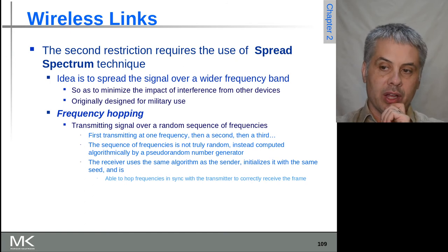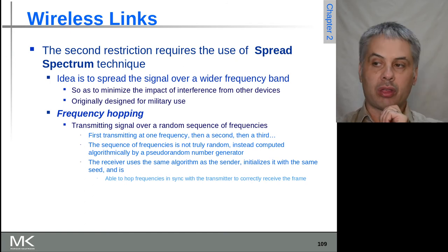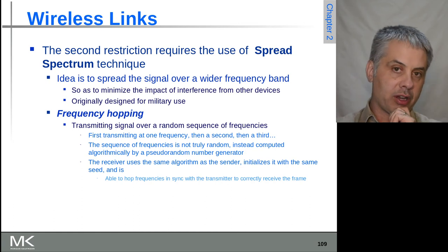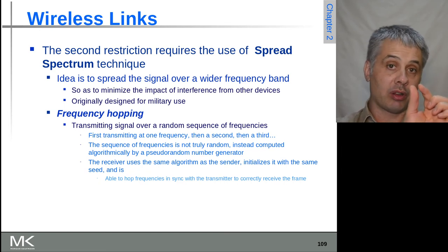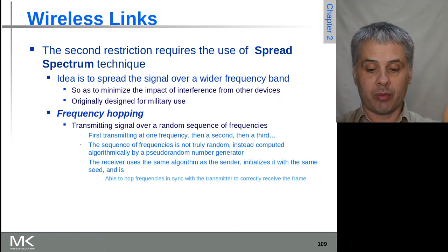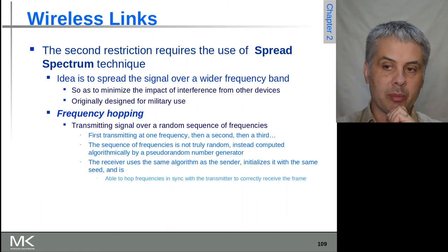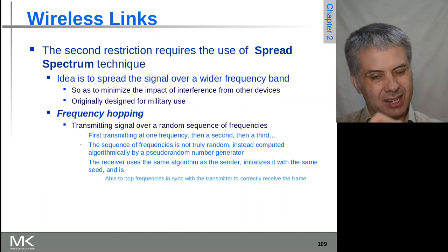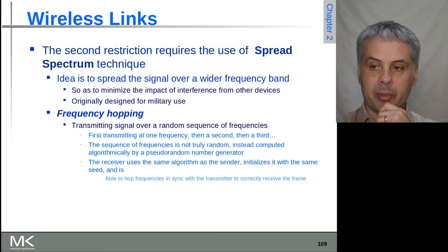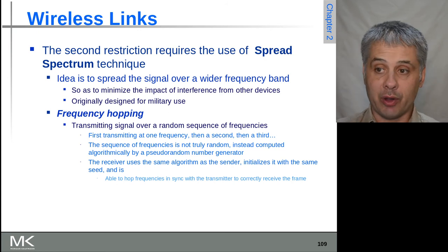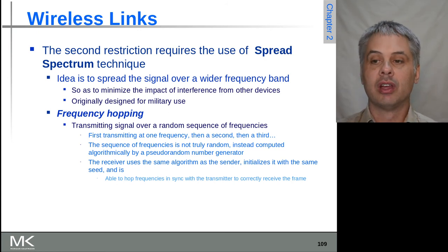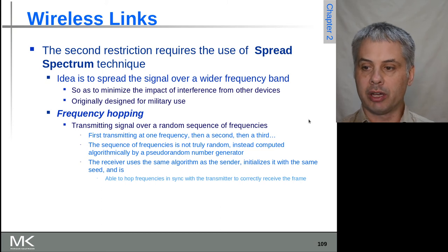Another approach is frequency hopping. Rather than staying on one thin channel over a long period, you use the thin channel but hop where it is randomly or pseudo-randomly in the frequency band. This makes the probability of any other user being interfered with on a continuing basis very low. The sender and receiver have to use the same sequence of hops to track each other's communications.